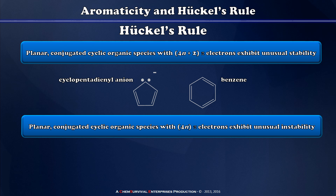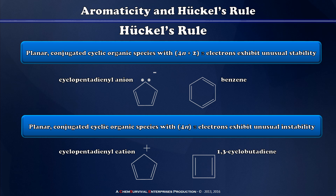Conversely, conjugated cyclic organic species with 4n pi electrons tend to exhibit an unusual instability and tendency to contort and twist in any way they can so that they are not planar. Classic examples of this are cyclopentadienyl cation and 1,3-cyclobutadiene.